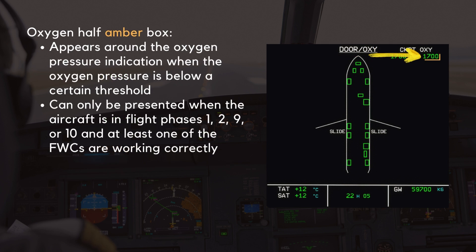An amber half box appears around the oxygen pressure indication when the oxygen pressure is below a certain threshold — again, consult your FCOM. This can only be presented when the aircraft is in flight phases one, two, nine, or ten, and at least one of the flight warning computers are working correctly.